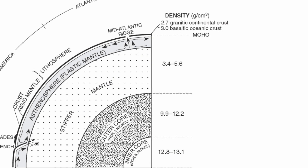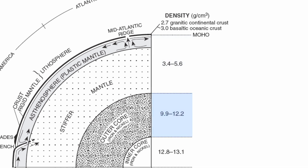Each layer has its own distinctive density range. The lithosphere, specifically the crustal part, goes between 2.7 and 3.0 grams per cubic centimeter, based upon what type of crust you're dealing with. There's a boundary between the crust and the rigid mantle called the moho, which indicates a stark density difference between those two layers. Earthquake waves not only change direction but also change speed — they speed up as they exit the crust and enter the rigid mantle. The asthenosphere ranges between 3.4 to 5.6 grams per cubic centimeter. The outer core is 9.9 to 12.2 grams per cubic centimeter, and the inner core is 12.8 to 13.1 grams per cubic centimeter.